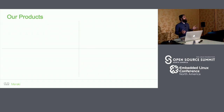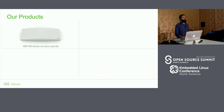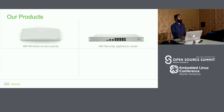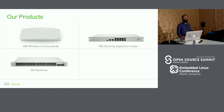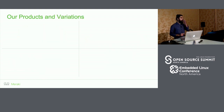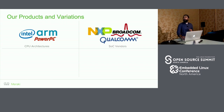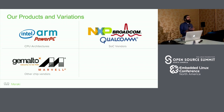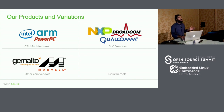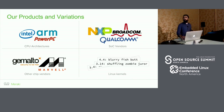We, as a company, build a number of products that we sell, ranging from wireless access points to security appliances, layer 2 and layer 3 switches, and security cameras. These products are built on a number of different hardware, ranging from different CPU architectures to different SOC vendors, and a number of auxiliary chips like LTE modules and switching hardware. We use a number of different kernels for these products, ranging from 3.4 all the way up to 4.9.